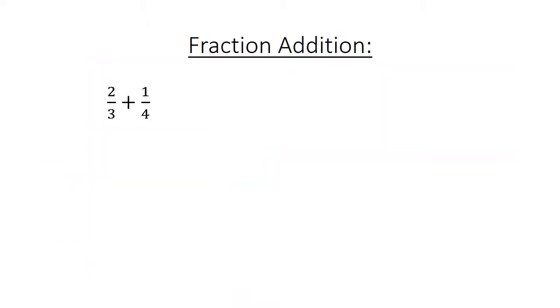Fraction addition. 2 over 3 plus 1 over 4. Find the lowest common multiple. 8 over 12 plus 3 over 12 equals 11 over 12.